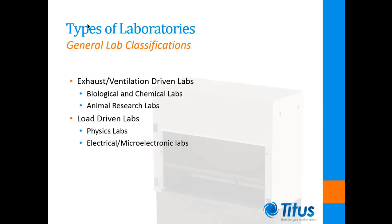Now that we have covered how laboratory ventilation is established, we can cover the two main categories of labs based on the HVAC system design. There are chemical and biological labs that typically have high exhaust rates because of the number of fume hoods used. There are also animal laboratories and holding rooms which have high ventilation rates to contain odor and meet code requirements. The other types of labs we see are load-driven labs where the airflow rates required to maintain space temperature far exceed exhaust requirements — typically physics and electronics labs with high sensible loads, and usually under positive pressurization.